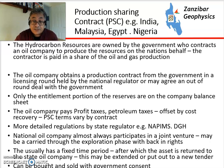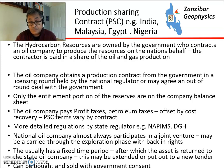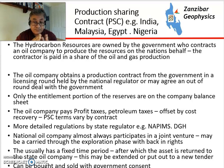Moving towards production sharing contracts — this gets a little more complicated. Countries like India, Malaysia, Egypt, Nigeria, and many others use these. The hydrocarbon resources are owned by the government, and they contract the oil company — referred to as the contractor — to produce these resources on the nation's behalf. The contractor is paid in a share of oil and gas production. There are two parts: cost oil, which is used to recover costs incurred in developing the field, and profit oil on top of that. The company also pays various petroleum and profit taxes. It's quite complicated and I'd advise you to talk to a commercial person about each specific PSC. Only the entitlement portion of reserves is on the company balance sheet.